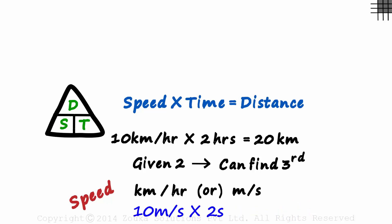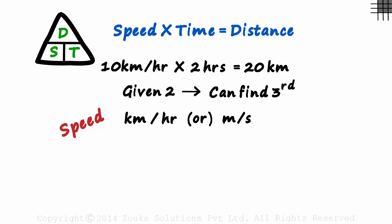But 10 meters per second times 2 seconds will equal 20 meters. That's because seconds get cancelled. So sometimes we may need to convert the speed from kilometers per hour to meters per second or vice versa.